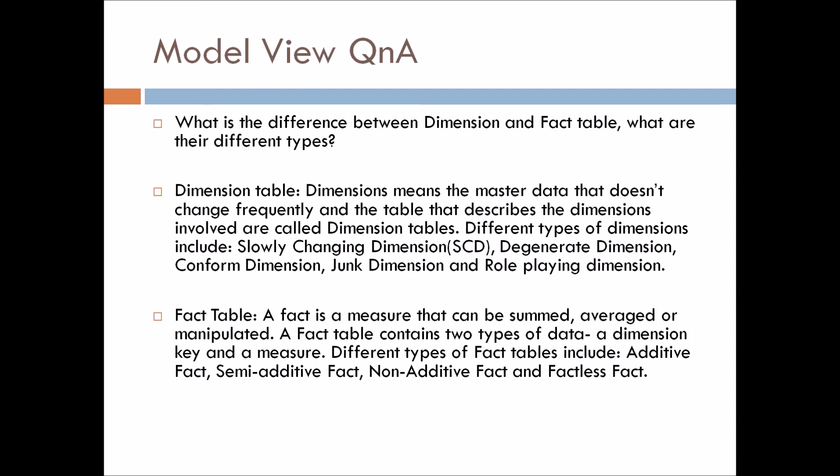We have four types of fact tables: additive fact, semi-additive fact, non-additive fact, and factless fact. I would also recommend you to Google these four types as they might ask you what are factless fact tables or non-additive fact tables. So just Google and prepare one or two lines for these types also.